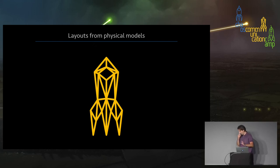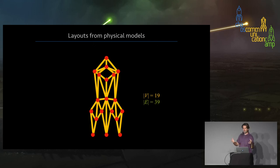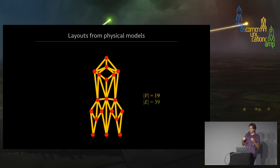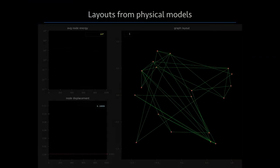Let's look at an example of how this works. This is a graph that all of you have seen — maybe you didn't think about it as a graph, but it is. It has 19 nodes and 39 connections. We will consider the nodes to be charged particles repelling each other and the connections as springs holding connected nodes together. We start with a random layout — the same graph, but you cannot recognize it with vertices placed in random positions. On the left side there are some plots I will explain, but let's see what happens when we iteratively simulate this physical system.